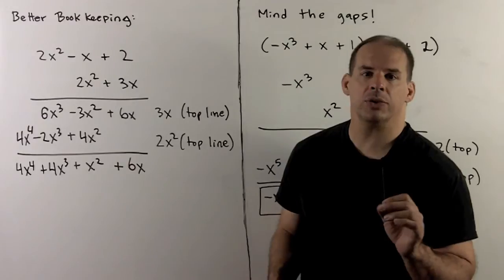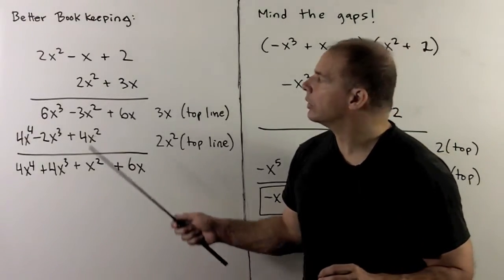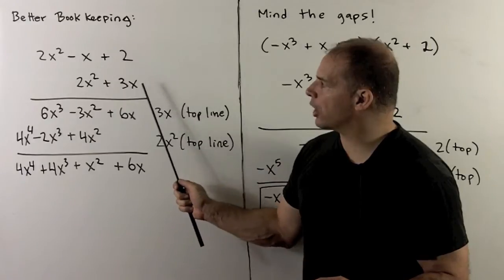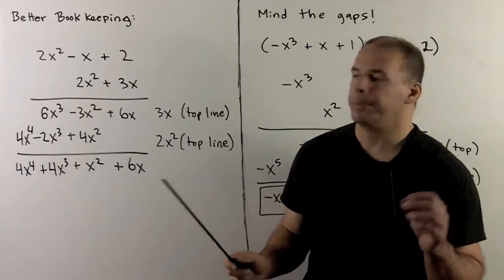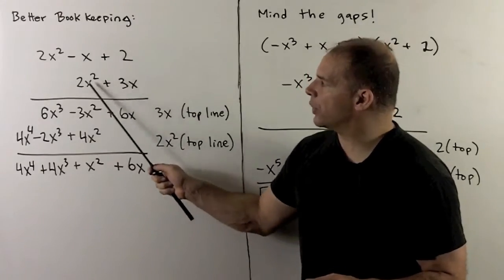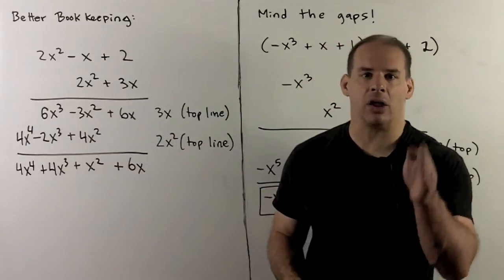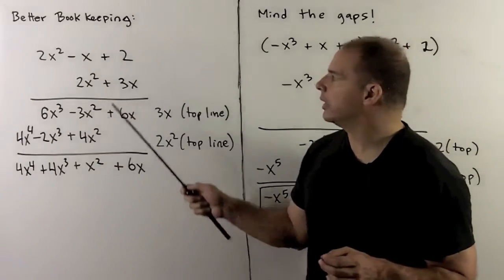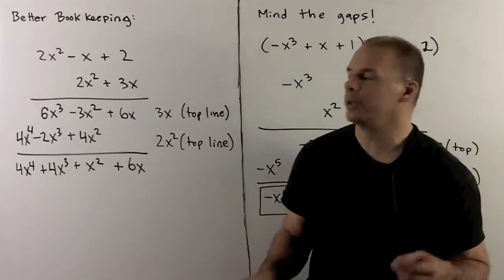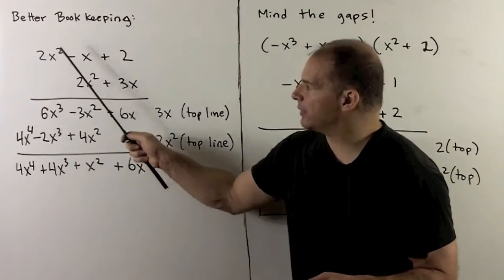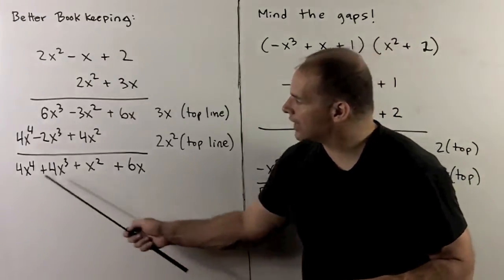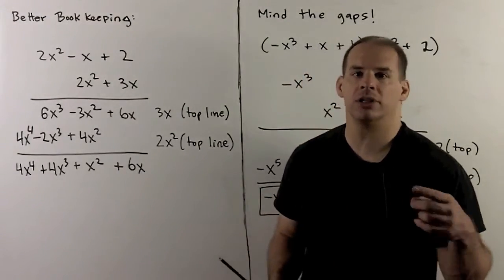In practice, we'll use a better way to do the bookkeeping. Let's redo the previous example. We put the longer polynomial on top. For the shorter polynomial, we go term by term, doing monomial times polynomial each time. For the 3x term, we get 6x cubed minus 3x squared plus 6x. When doing the 2x squared term, we keep things organized by column, placing like exponents in the same column: 4x squared in the x squared column, minus 2x cubed in the x cubed column, 4x to the 4th in the x to the 4th column. Then we add down each column. The answer agrees with the previous result — it's the same work, just better organization.